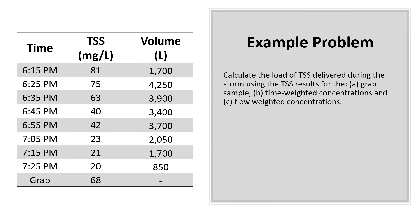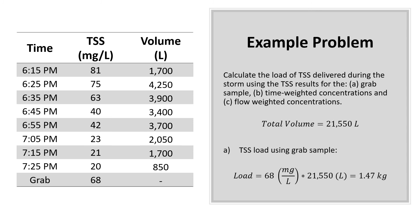We will calculate the load of TSS delivered during the event using three different techniques for estimating the concentration of the storm. The first technique uses the results of the grab sample. To calculate the load, the concentration of the grab sample is multiplied by the total volume of the storm, providing a load of 1.47 kilograms.